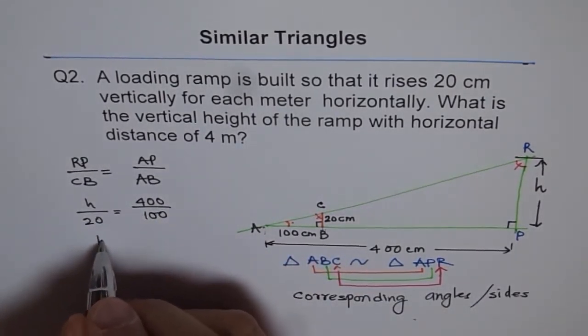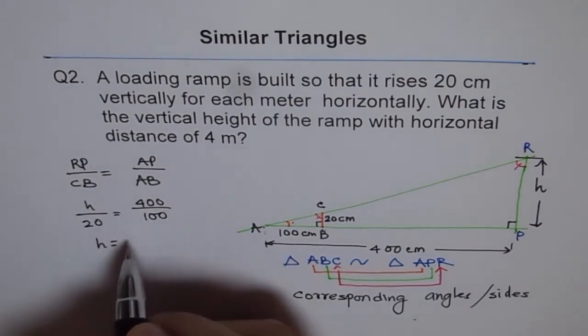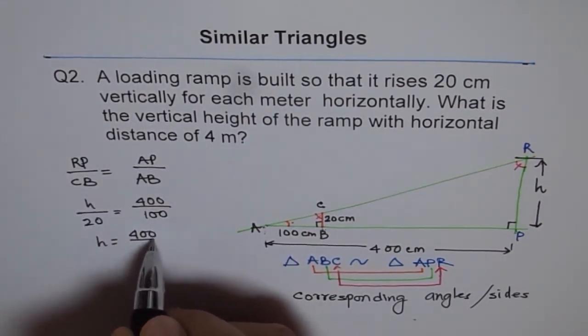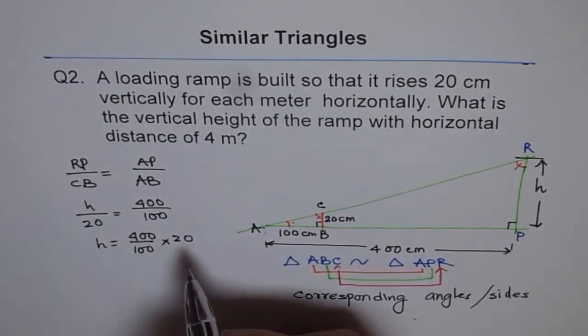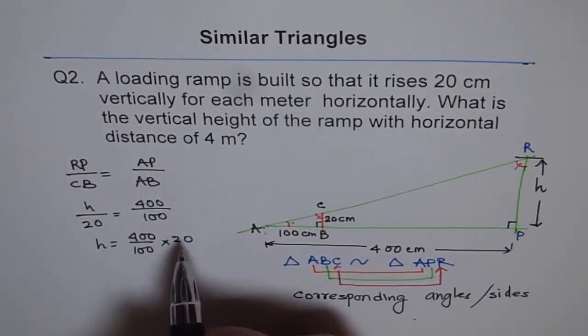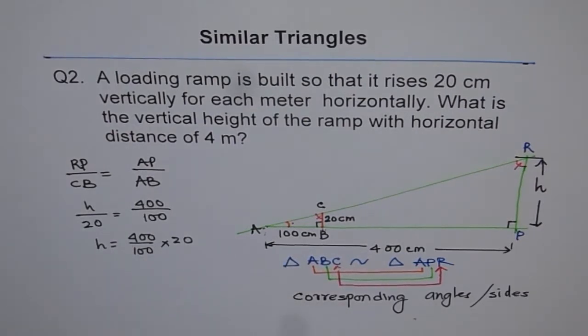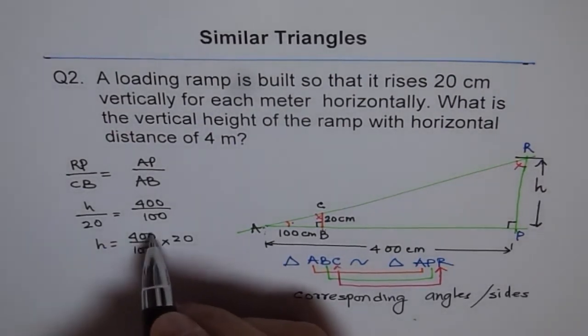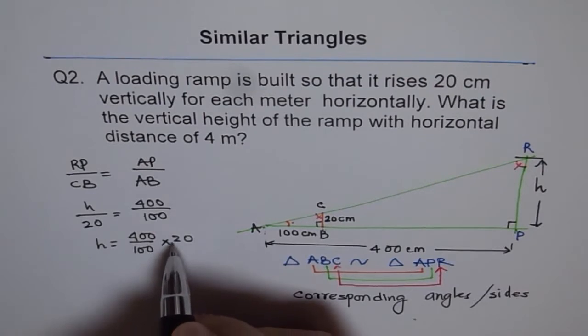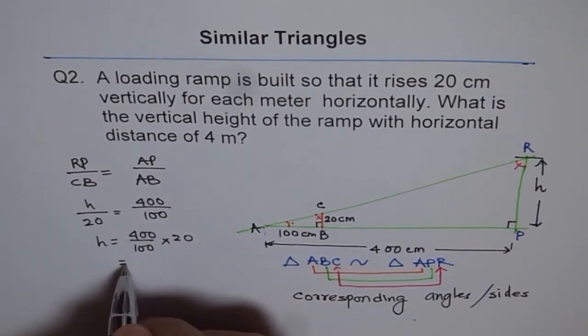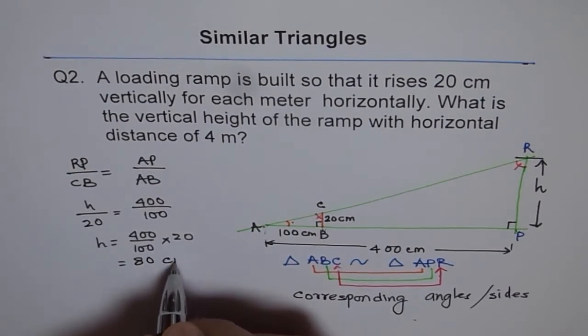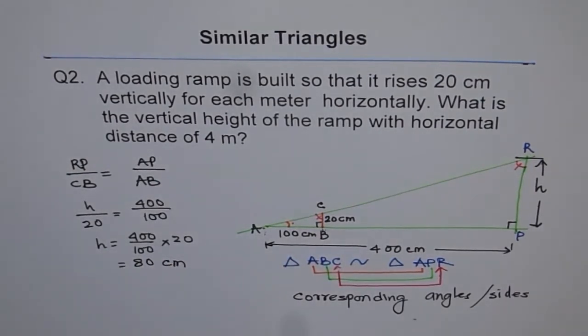From here, we can calculate H equals 400 over 100 times 20. So we get 400 will give us 4 times 20 equals 80. So we get 80 centimeters. That is our answer.